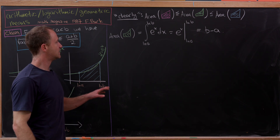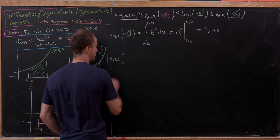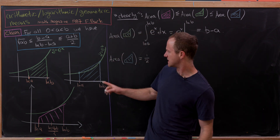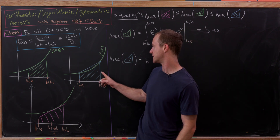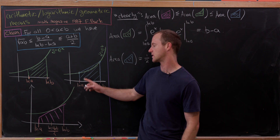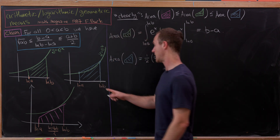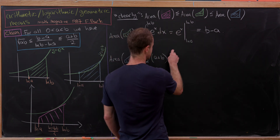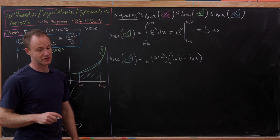Now for the blue trapezoid area. Using the trapezoid area formula — one half times the sum of the two heights times the base — the heights are the values of e to the x at x equals ln b and x equals ln a, which are b and a respectively, giving a sum of a plus b. The base is ln b minus ln a. So the area of the blue trapezoid is one half times (a plus b) times (ln b minus ln a).